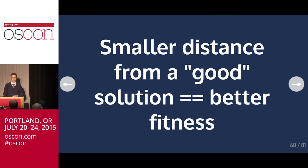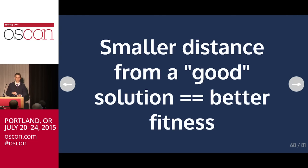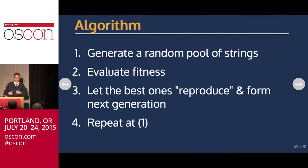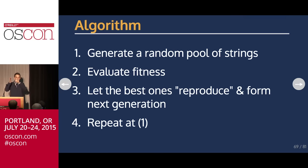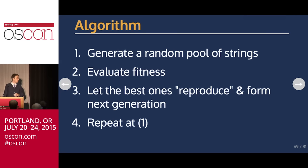Once you evaluate fitness — smaller distance from the target is better — you let the best ones reproduce to form the next generation. You either mutate by changing some letters, or you cross them over: take the first half of string A and second half of string B, put them together. Repeat for multiple generations and hope to converge on a solution. It works pretty well for most problems. In practice, the fitness function is the most expensive part — both in figuring out how to express the problem and in runtime, because computing fitness normally takes a really long time and is usually the bottleneck.